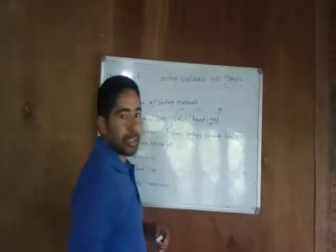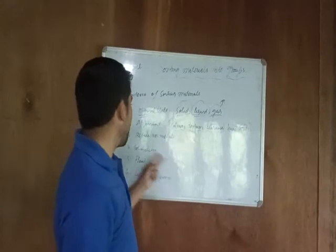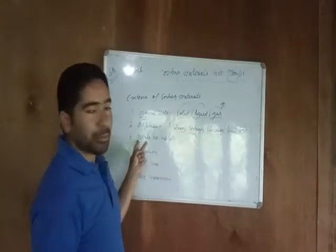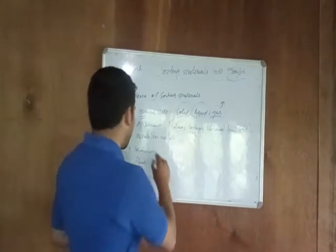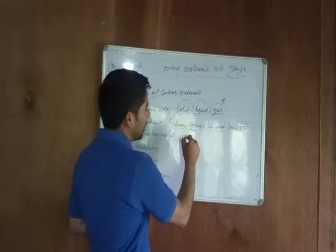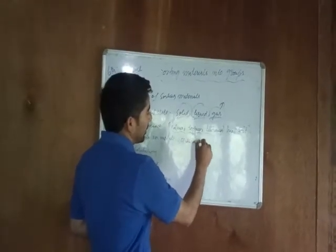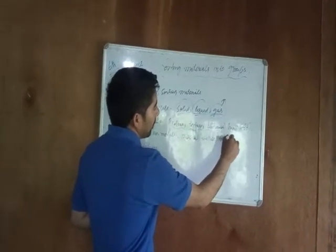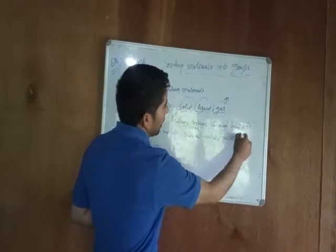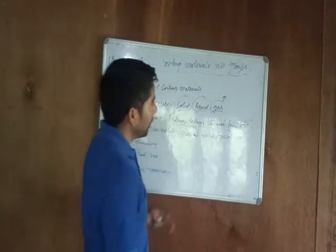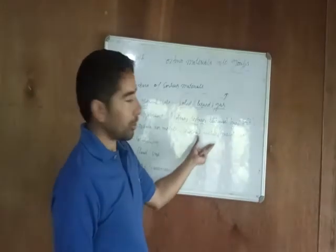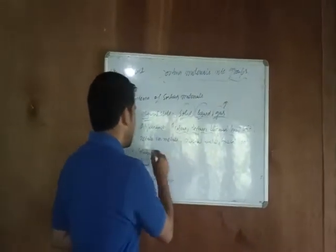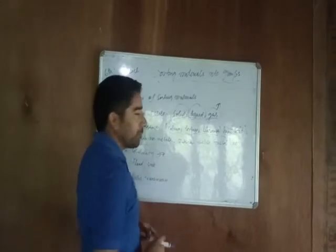Number three criteria for sorting materials is whether a material is a metal or whether a material is a non-metal. We have to check a material whether it is a metal or a non-metal, and accordingly we can place the material into the group of metals or into the group of non-metals.